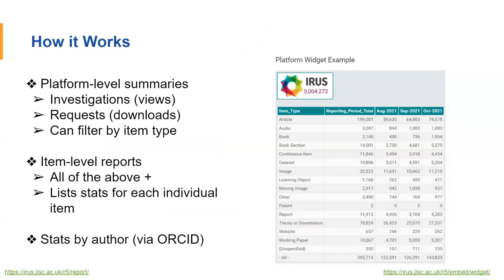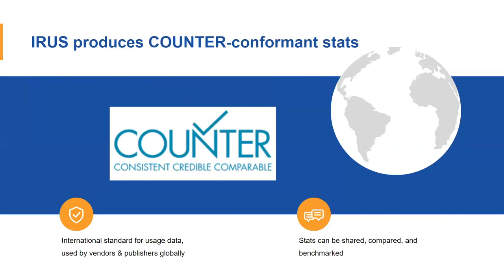All of the stats can be made publicly visible. The image on this slide is an example of the IRIS widget, which can be displayed in the user interface of your repository. IRIS produces counter-conformant statistics. Counter is an international standard used by publishers and vendors supplying subscription-based content to libraries. Counter basically ensures that usage numbers are accurate and reliable by filtering out bots and web crawlers and standardizing the data so that it can be compared. Now you could compare your usage of IR materials to your subscription content and have more aligned assessment across library resources.